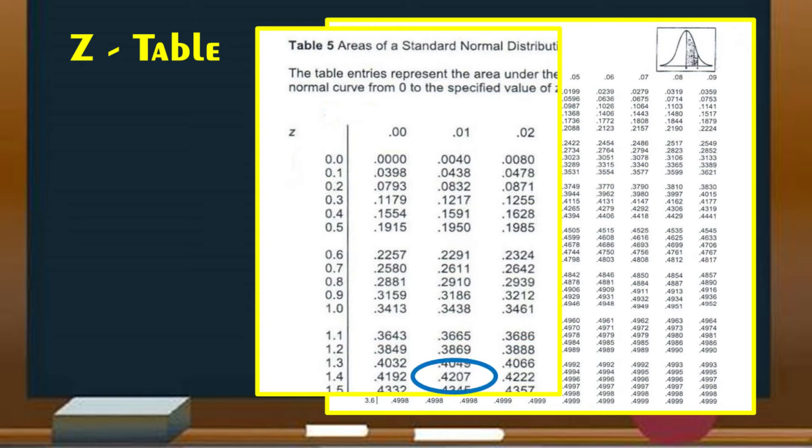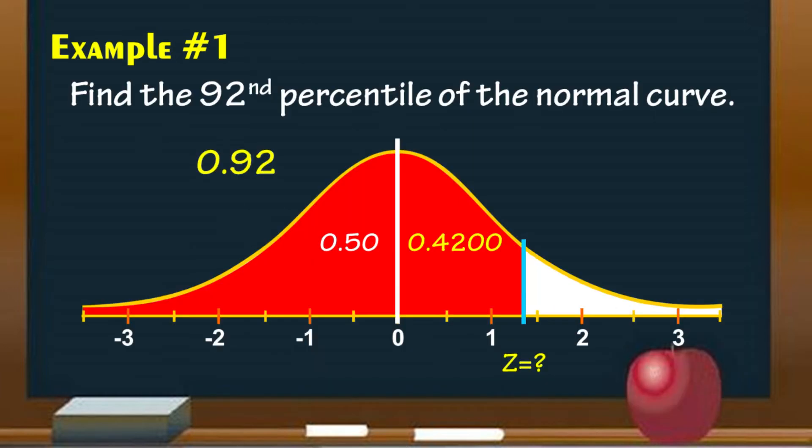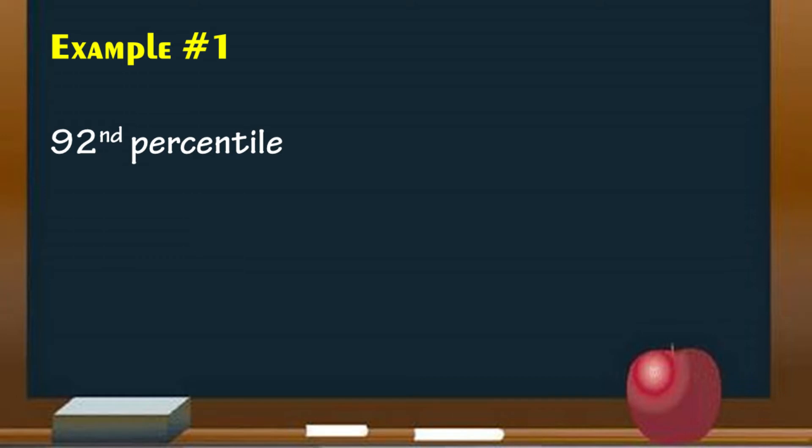That is 0.4207. And the Z value that corresponds to 0.4207 is 1.41. Therefore, 92nd percentile is located at Z equals 1.41.